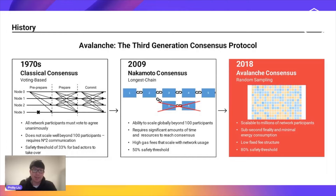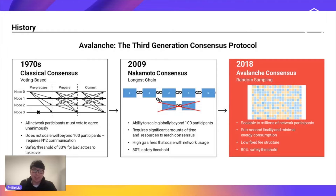Along comes Satoshi Nakamoto in 2009, creating a new consensus protocol completely different from the classical consensus family, based on proof of work. The defining feature of Nakamoto consensus is that it allows for permissionless validation of the network — anybody who has a miner can participate. But we all know the drawbacks: very high transaction fees, very low throughput, and long confirmation times.